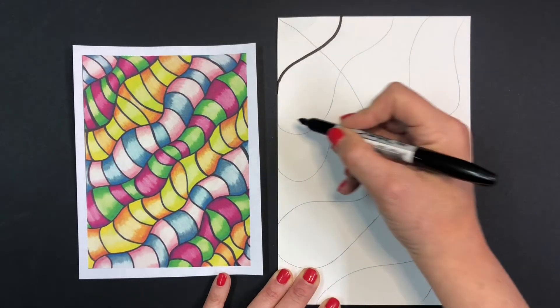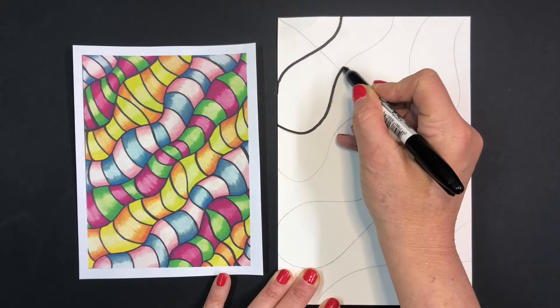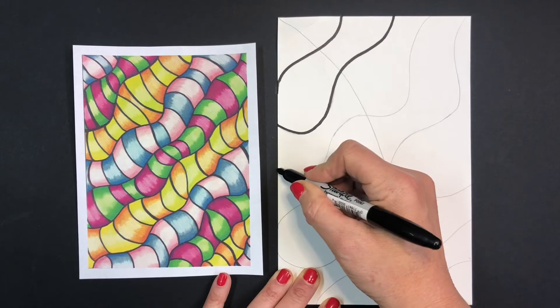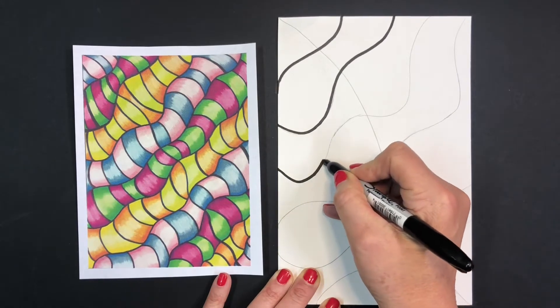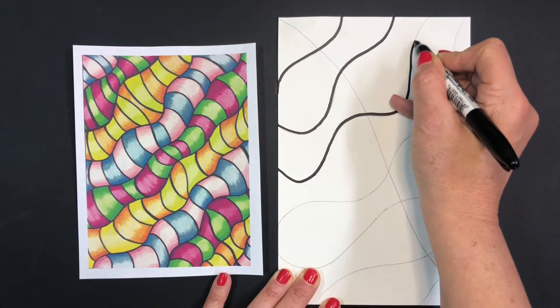And if you would like to do this tube design, all you need to do is draw some curved lines going diagonally across the page and you're going to be doing this in pencil first.